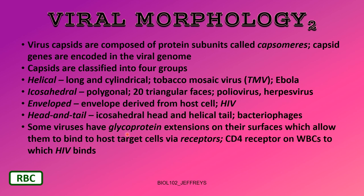Some viruses have glycoprotein extensions on their surfaces that allow them to bind to host target cells via receptors. For example, the CD4 receptor on white blood cells is what HIV binds to. HIV has the spikes — the glycoprotein extensions — and the T4 lymphocytes have CD4 receptors. The two hook up, and that's how HIV gets into the white blood cell, the lymphocyte.